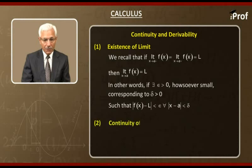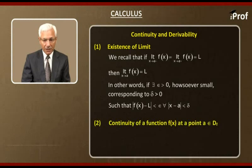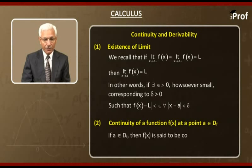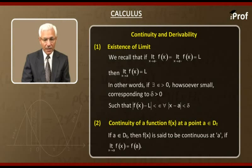Now we take up continuity of a function f(x) at a point a which belongs to its domain. That is, if a belongs to the domain of f, then f(x) is said to be continuous at a if limit x tends to a f(x) is equal to f(a).